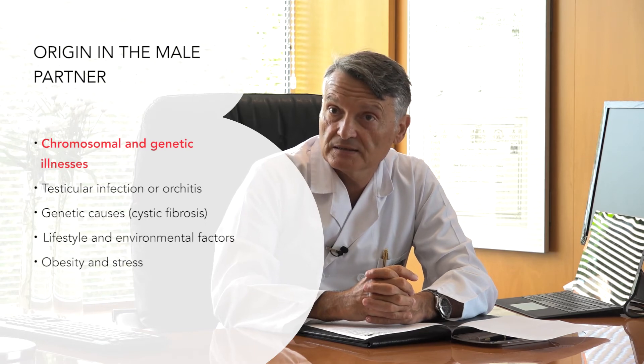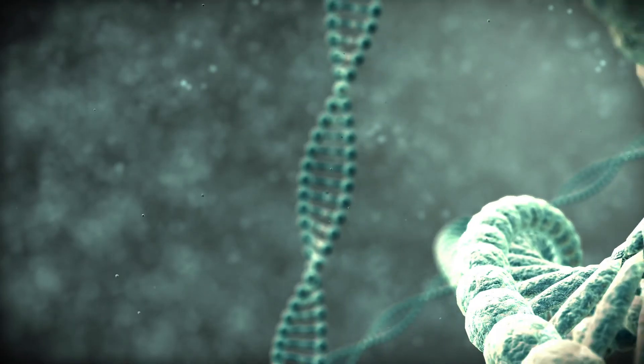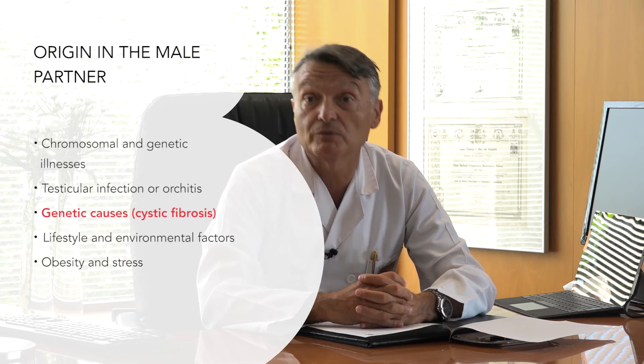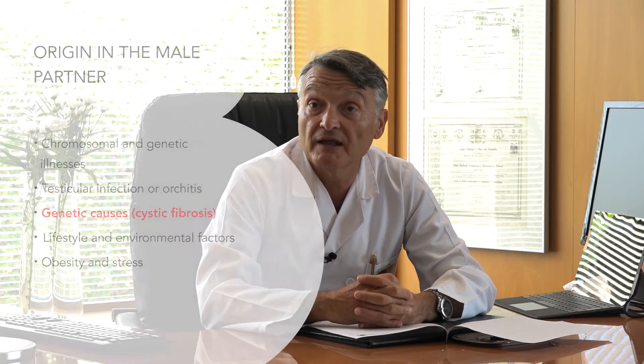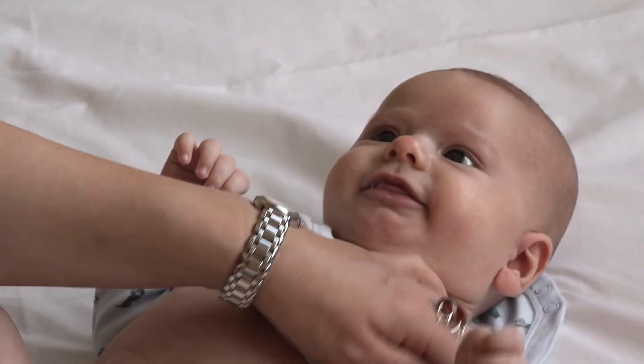Chromosomal and genetic disorders play an important role within the known causes. There are pathologies in which a child is born with anomalies in the number or structure of its chromosomes, leading to an absence of spermatozoa production or a very diminished production. In some cases, if it is detected in time, sperm can be frozen before testicular activity ceases altogether. Other causes include the after-effects of infections or genetic disorders, such as cystic fibrosis, where a child is born without a vas deferens.